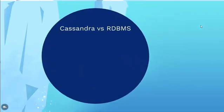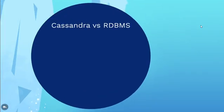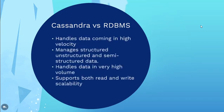Next, we see why NoSQL Cassandra database is better compared to traditional relational databases. Firstly, it handles data coming in high velocity which a relational database cannot handle. Next, it manages all kinds of structured, unstructured and semi-structured data whereas a relational database can manage only structured data. It handles data in very high volume. It supports both read and write scalability whereas a traditional database supports only read scalability.